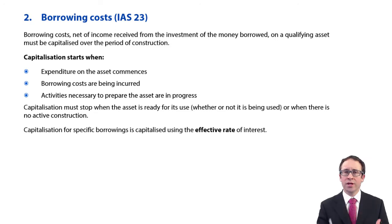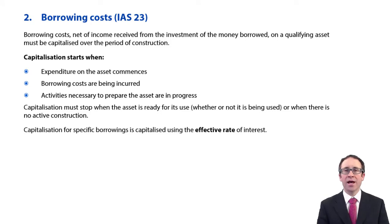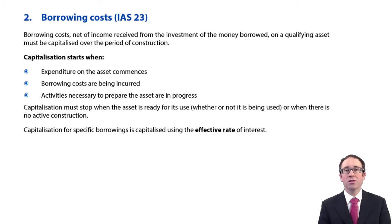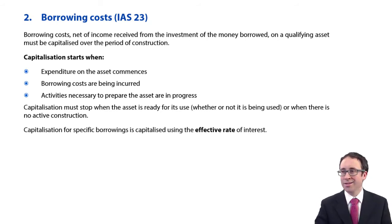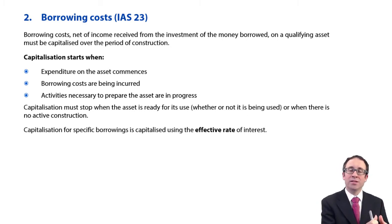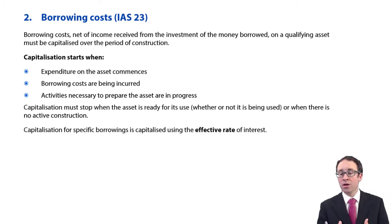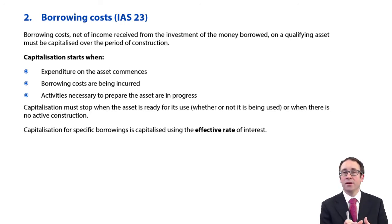If we're going to construct an asset over a substantial period of time, then we may take out a loan to fund the construction. If we take out a loan, we will therefore incur interest. That interest is effectively a cost incurred due to the borrowing. And because that cost is directly attributable to the construction of the asset — i.e. if we had not been constructing the asset, we would not have taken out the loan — then instead of the traditional expensing of interest through profit or loss, we are allowed to capitalise that interest as part of the cost of the asset. Once capitalised, it is then depreciated in the usual manner.